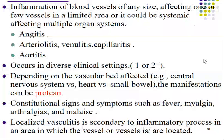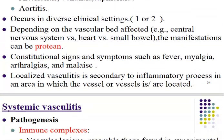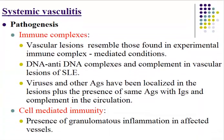Localized vasculitis is secondary to an inflammatory process in a limited area, affecting solitary or multiple vessels. Regarding the pathogenesis of systemic vasculitis, two main immune mediators can be involved: immune complex deposition (antigen-antibody deposition) or immune cell-mediated mechanisms.